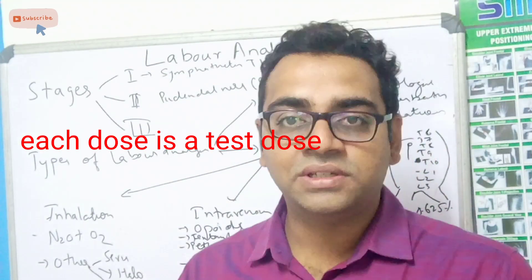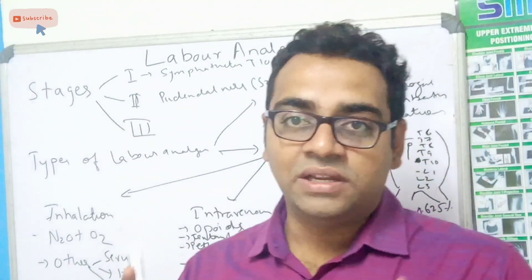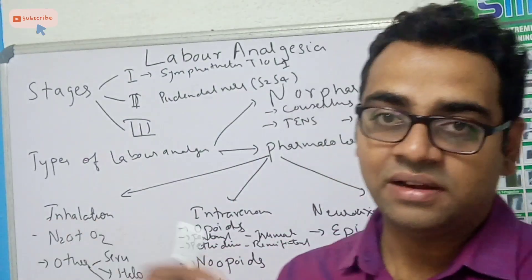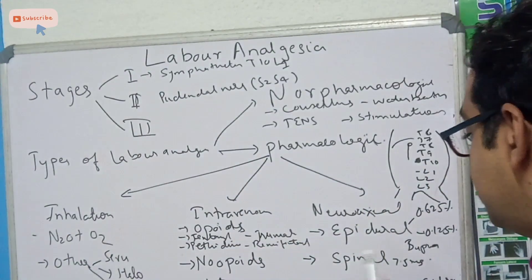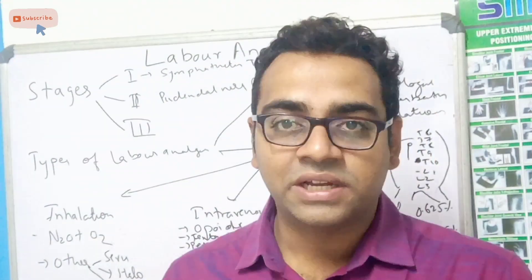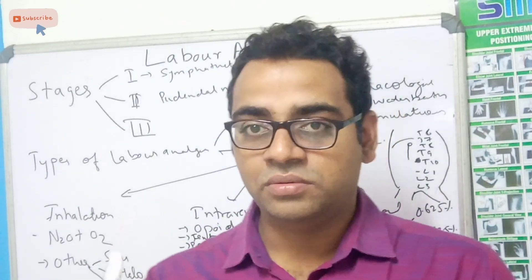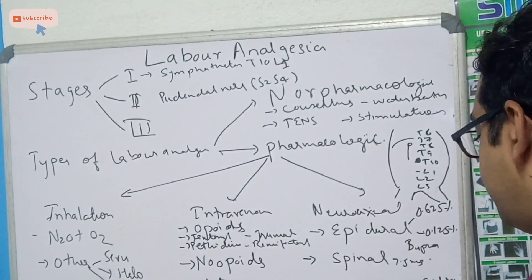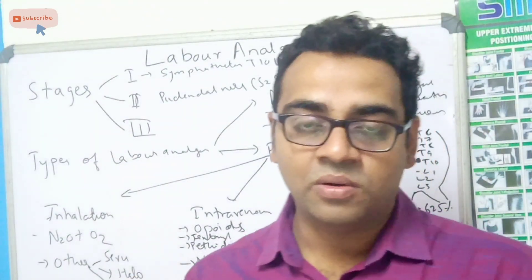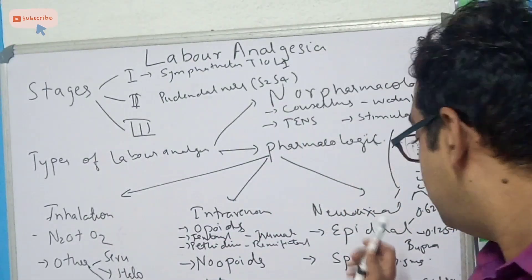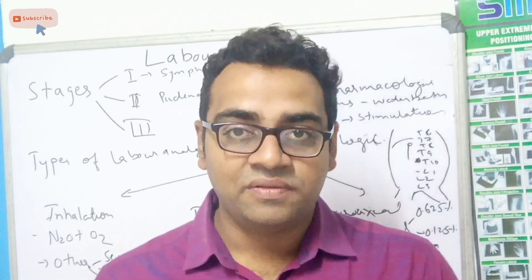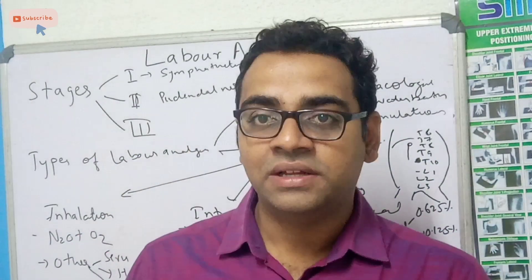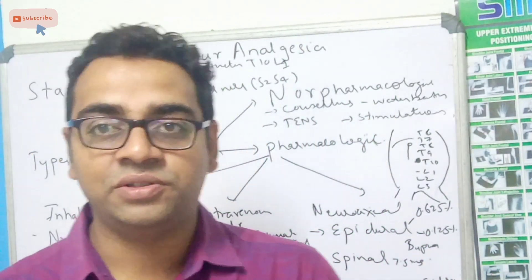Each epidural dose is treated as a test dose. For the initial test dose, we use 1 in 200,000 lignocaine with adrenaline, given slowly through the epidural catheter, to detect an increase in heart rate and neuromuscular weakness. There is also spinal analgesia, where bupivacaine is injected into the spinal cavity as a subarachnoid block for low-dose analgesia effect — this is analgesia, not anesthesia. Combined spinal-epidural involves initially injecting an opioid or local anesthetic spinally, followed by continuous infusion of local anesthetic in the epidural space. The concentration of local anesthetic is so low that the patient can move their limbs — this is also called walking epidural.